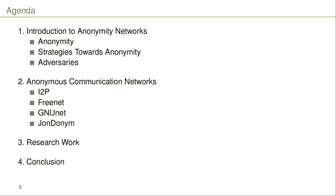Let's have a look at the agenda for this talk. First of all, we do some basics about anonymity and strategies to achieve anonymity. We look at different adversaries, and afterwards we have a look at practical anonymous communication networks, especially I2P, Freenet, GnuNet, and Jondonym. Afterwards, for a short period, we look into current research work and conclude the talk.